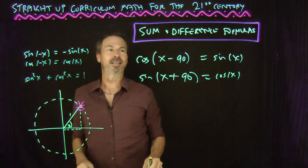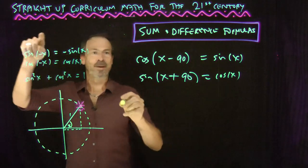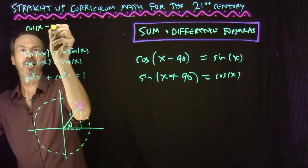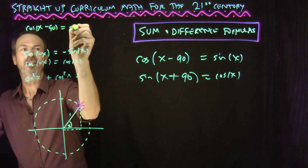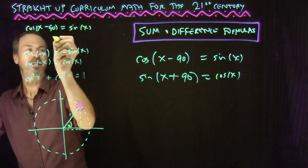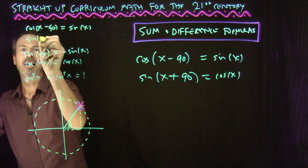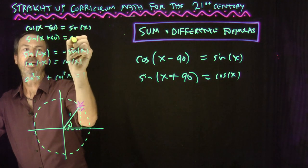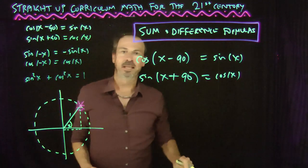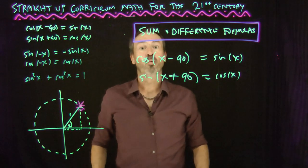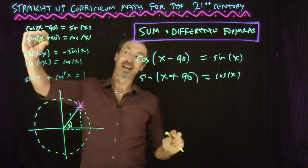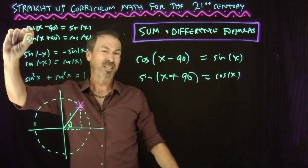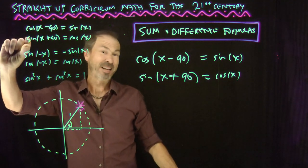So there are some more trig identities. I can convert sine into cosine, or cosine into sine, by adding or subtracting 90 degrees in one of the inputs. It shows sine and cosine are very intimately related, so once I've already got information about the cosine, I've already got information about the other.